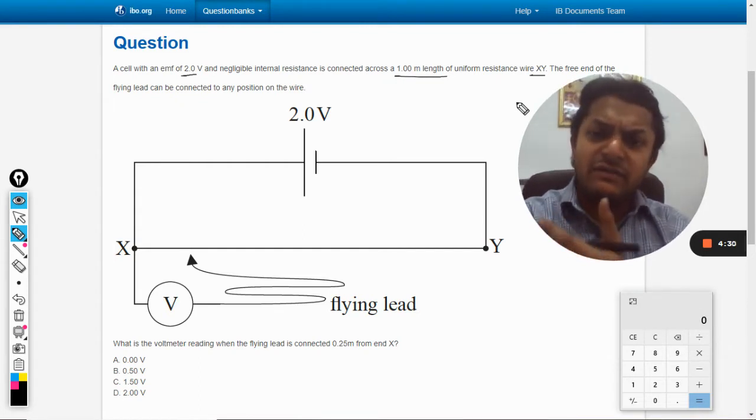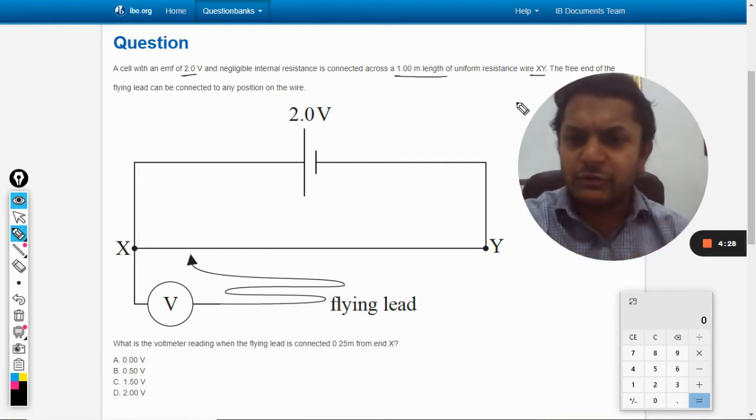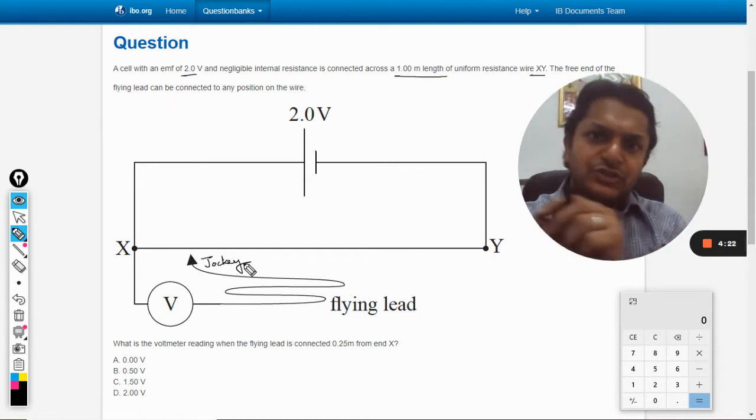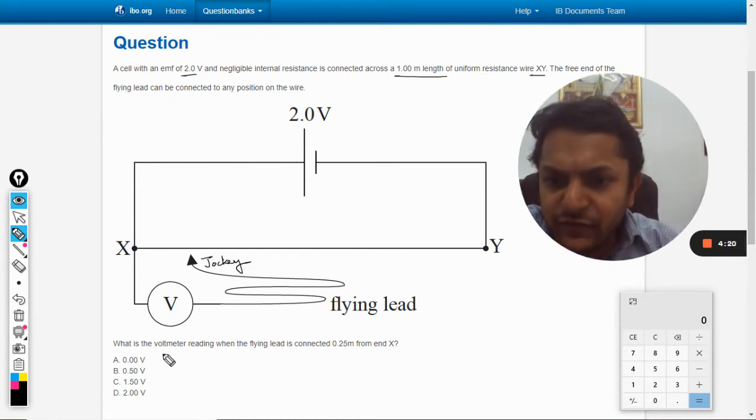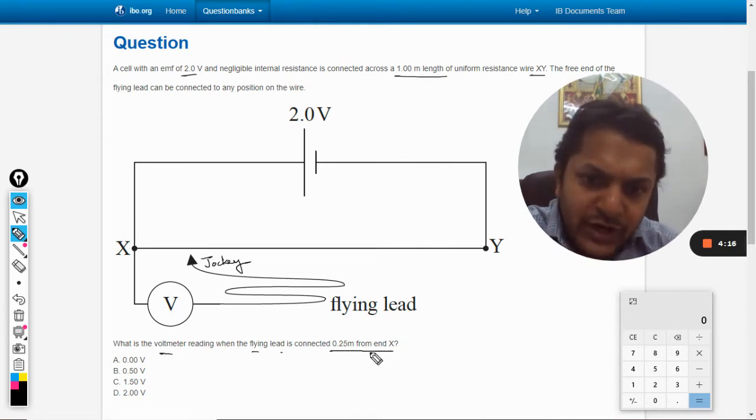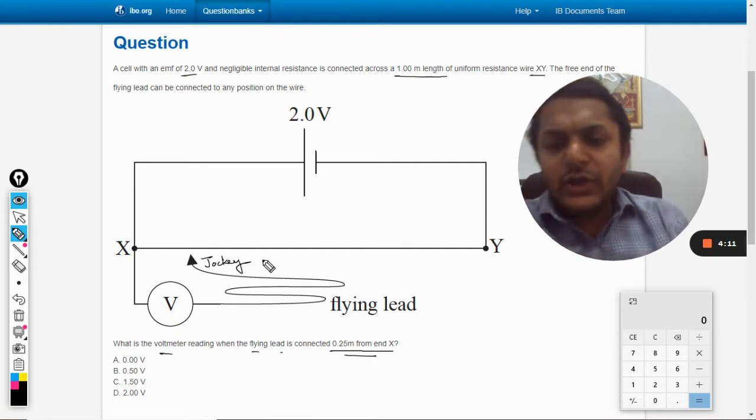Potentiometer is a device where we are using these kinds of equipments. This is generally known as a jockey because it moves and keeps on jumping around the wire. What is the voltmeter reading when the flying lead is connected 0.25 meter from the end X?